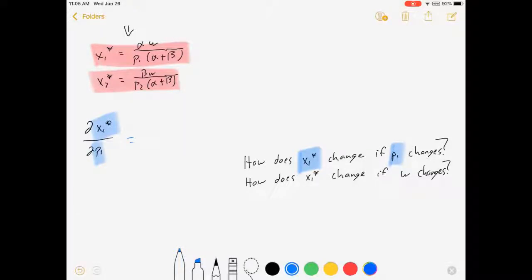And so this is going to be equal to negative alpha w over p1 squared times (alpha plus beta). And for standard parameter values that comes out as negative.